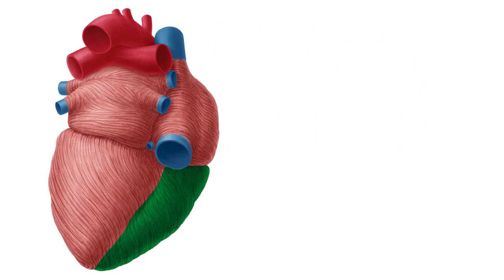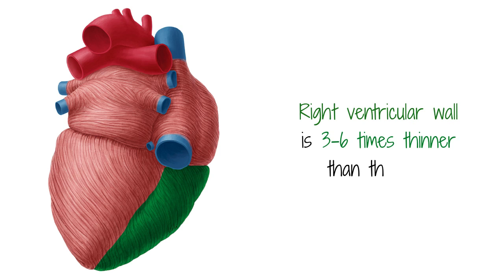The right ventricular wall is three to six times thinner than the left because it starts off thicker and reduces in mass towards the apex. Despite this difference in muscle mass, the inner chambers of the ventricles are the same size and can contain approximately 85 milliliters of blood in adults.